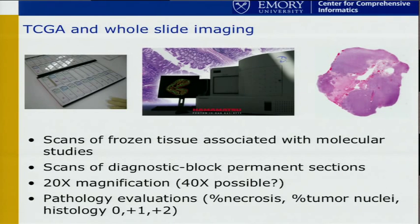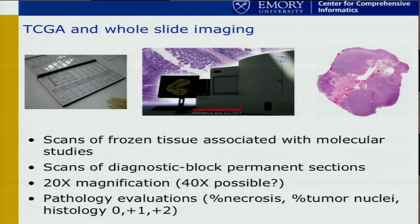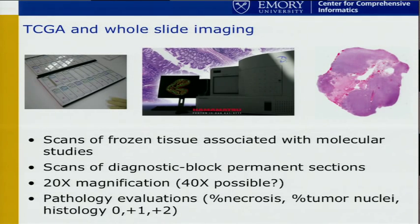TCGA is a unique dataset in the sense that you have a large number of samples where histology is linked with patient outcome and molecular data. We now have slide scanners — you put 200 or so slides in, and overnight it produces high-resolution images of more than a billion pixels at 20x magnification. Within TCGA, we have scans of frozen tissue — a top and bottom slice for quality control — and also scans of diagnostic block permanent sections, which is mostly what we use for automated image analysis. These are at 20x magnification, and we'd really like to have 40x if that's possible.